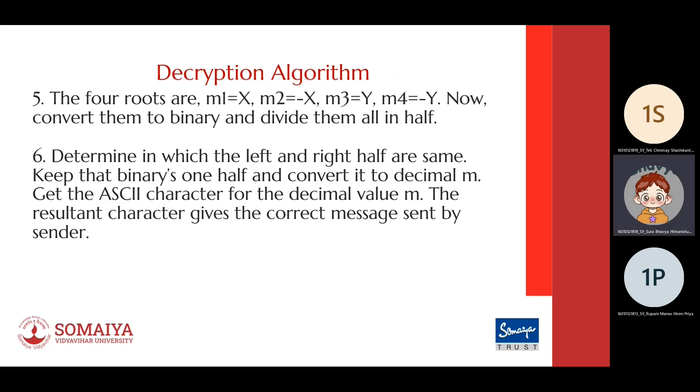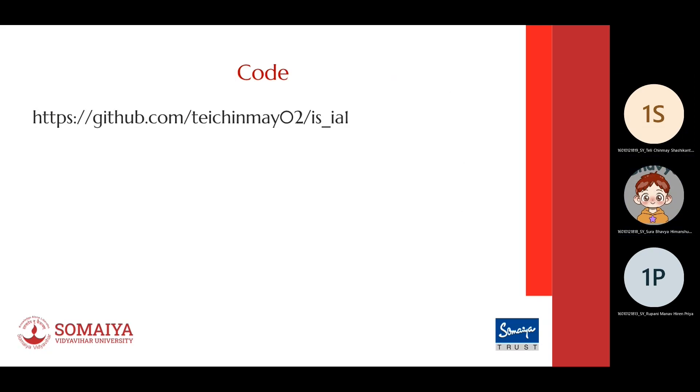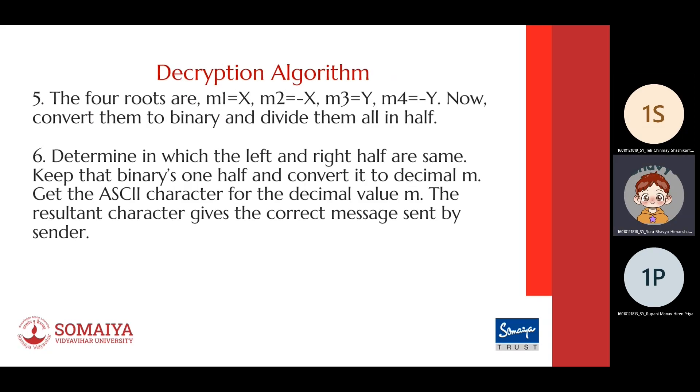Then we determine if the left half and right half are same, keep one half as it is, and convert the other half into a decimal value m. Then we get the ASCII character of that decimal value, and the resulted character gives the correct message which was originally sent by the sender. This algorithm may be a little complex but it is very secure, and hence it is very difficult to break.